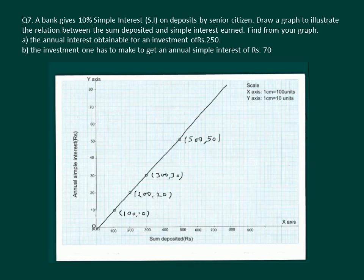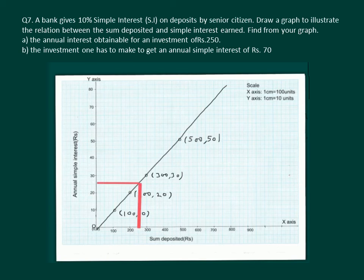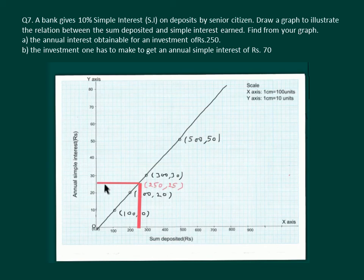Now it remains to find the values asked — first, the annual interest for an investment of Rs 250. We locate 250 on the x-axis, draw a perpendicular to the graph line, and from that point draw another perpendicular to the y-axis. We find the coordinates of this point are (250, 25). Hence, if the sum deposited is Rs 250, the interest earned is Rs 25.